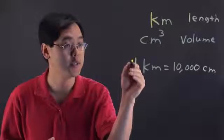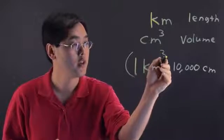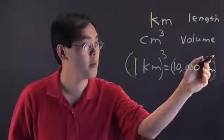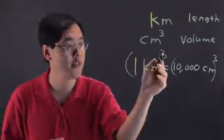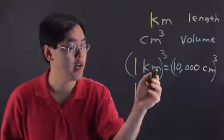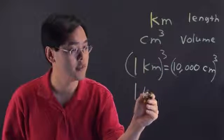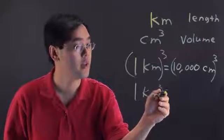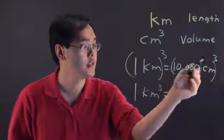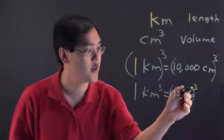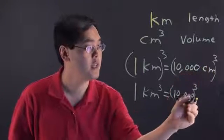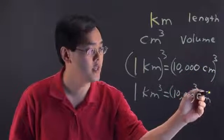And how you do that is simply cube both sides. So what you've got to think about is one to the third is one, kilometers cubed is kilometers cubed, and 10,000 to the third is, I'm just going to leave it in exponent form, 10,000 to the third power, and centimeter cubed is centimeter cubed.